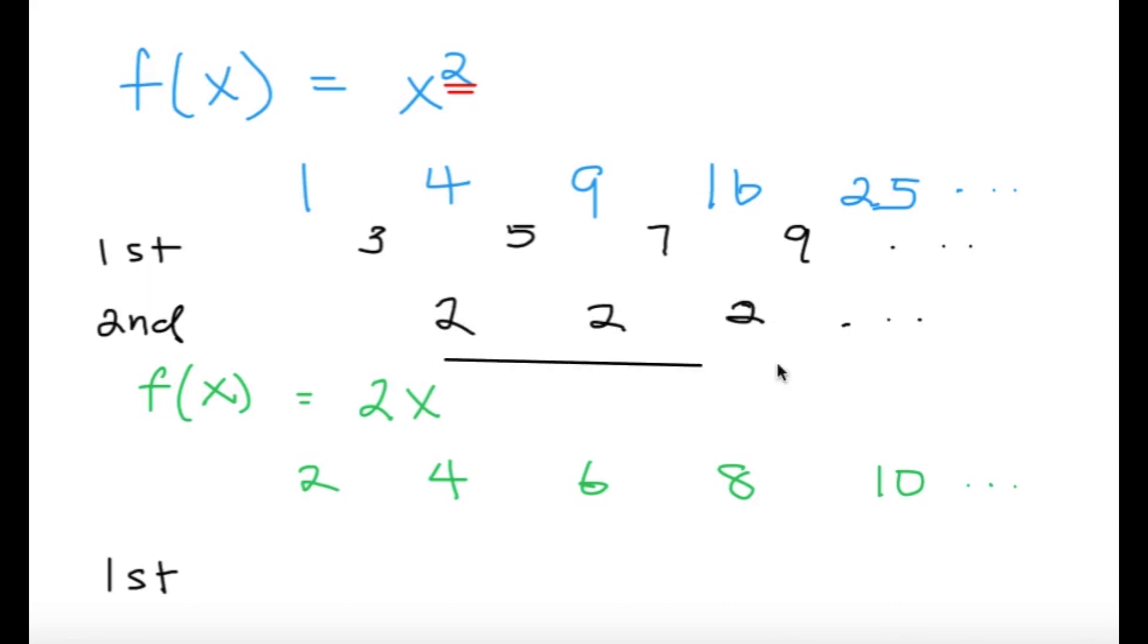So, we can see here that the second difference, it's all 2s, and therefore, it's constant. Now, for a linear function, let's say f of x equals 2x. If I substitute 1, 2, 3, 4, 5, and so on, I'm going to get 2, 4, 6, 8, 10, and so on.